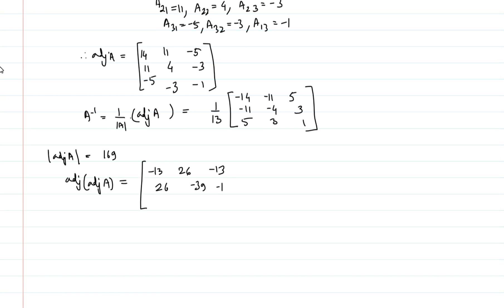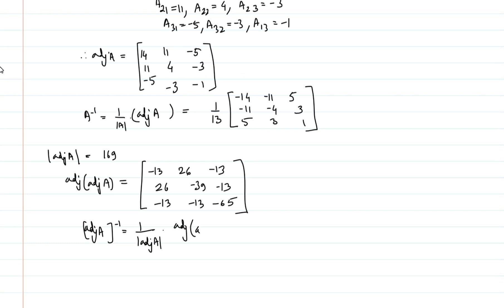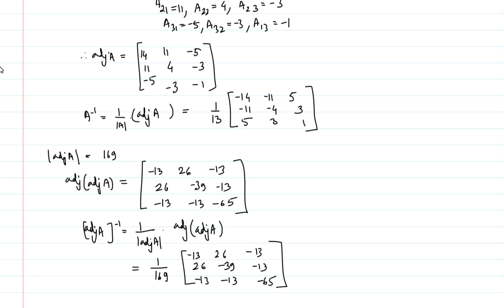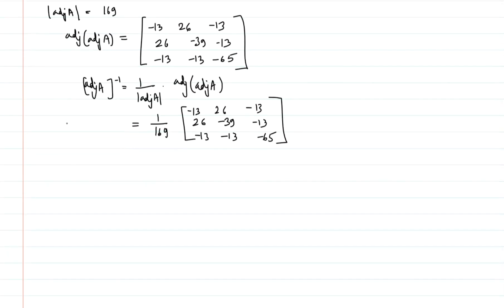So now adjoint of A whole inverse equals 1 by determinant of adjoint of A times adjoint of adjoint of A. The determinant is 169, so putting that in, this gives us adjoint of A whole inverse. Simplifying, this is your adjoint of A whole inverse.